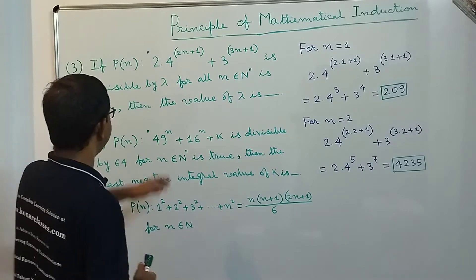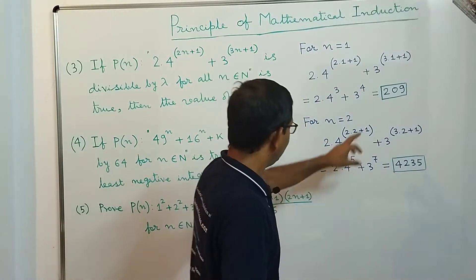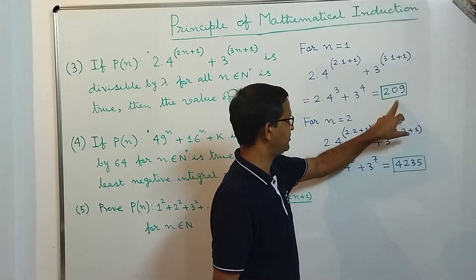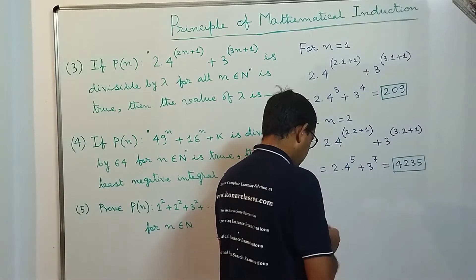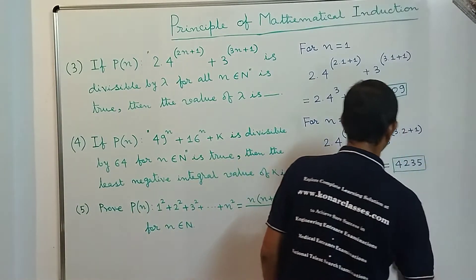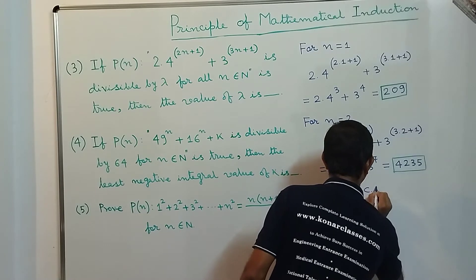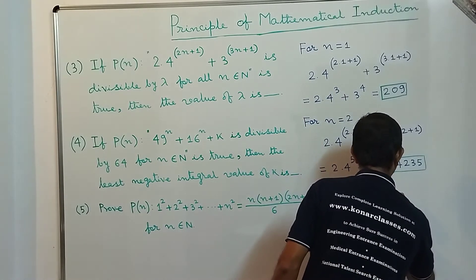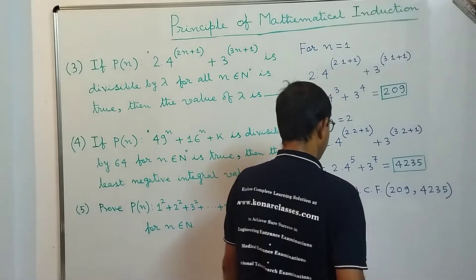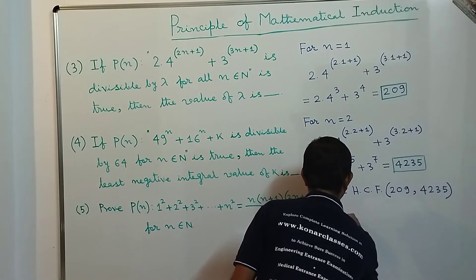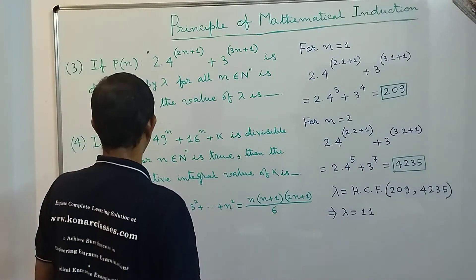Since the expression is divisible by λ for all n ∈ ℕ, the value of λ must be the highest common factor (HCF) of 209 and 4235. Computing this HCF — which we know from class 10 — gives us λ = 11.